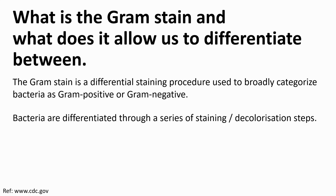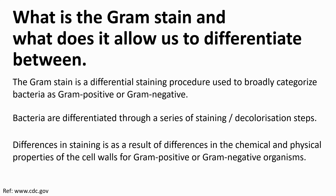Bacteria are differentiated through a series of staining and decolorization steps. Staining differences are as a result of differences in the chemical and physical properties of the cell walls for gram positive or gram negative organisms.